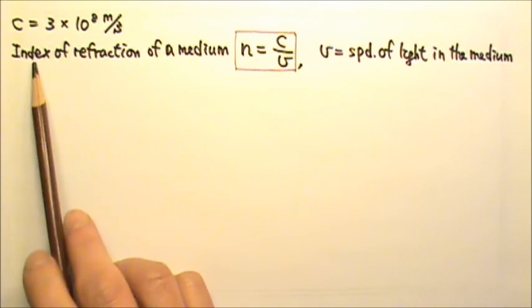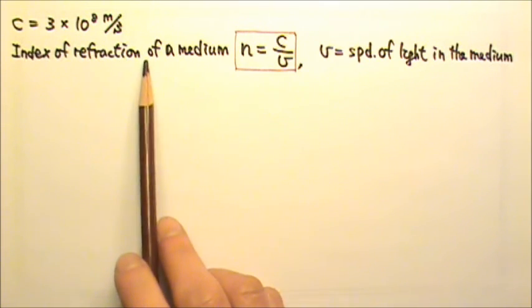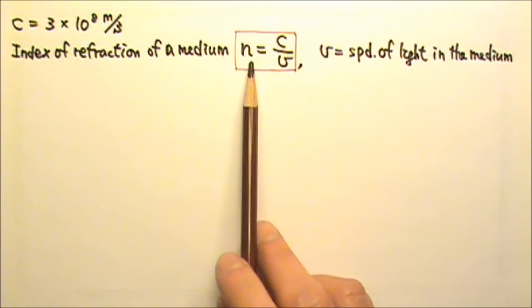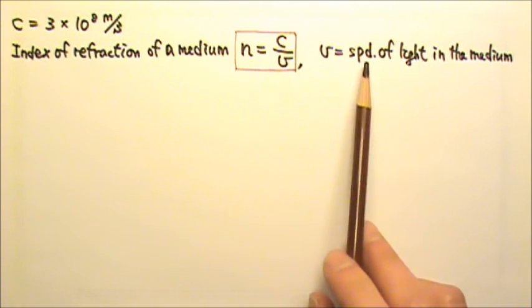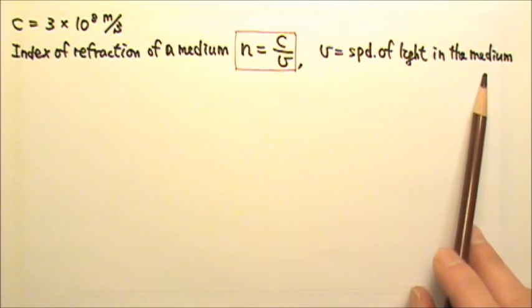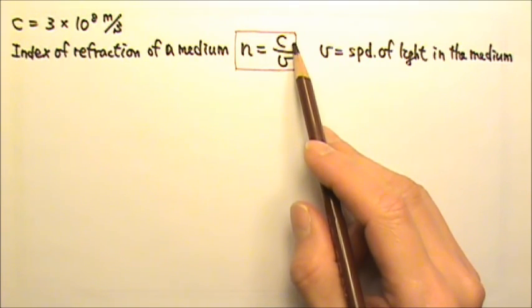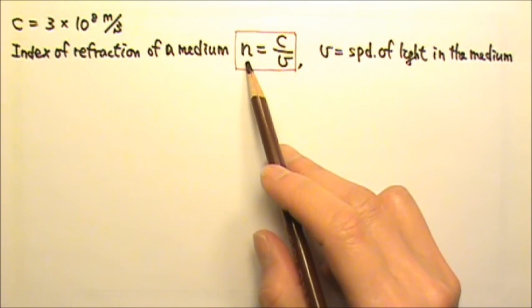We define this thing called index of refraction of a medium to be C over V. This N is the index of refraction, and the V is the speed of light in the medium. Because the speed of light in any medium cannot be faster than C, N can never be smaller than 1.